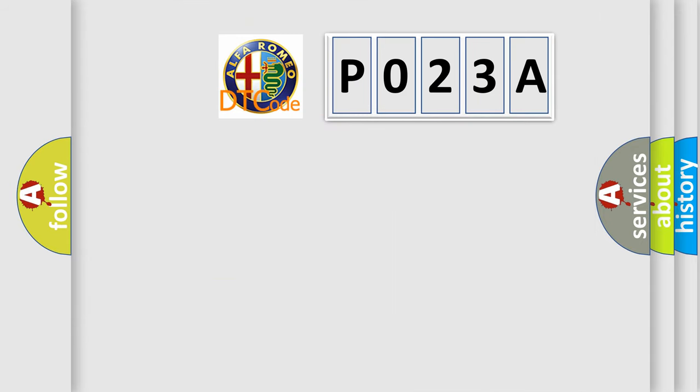The number itself does not make sense to us if we cannot assign information about what it actually expresses. So, what does the Diagnostic Trouble Code P023A interpret specifically for Alfa Romeo car manufacturers?